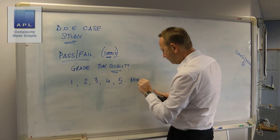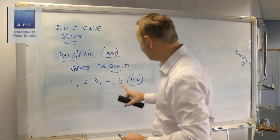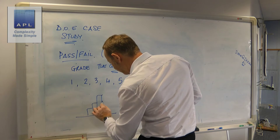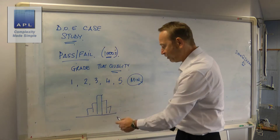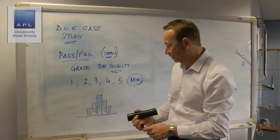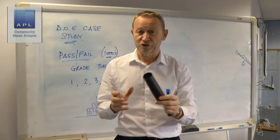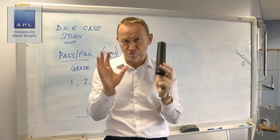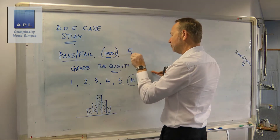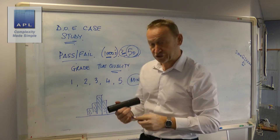Five is the minimum number of categories. We don't want fewer because five is the minimum number of categories you'd need if you tried to create some kind of histogram of what's going on. So we'll use a one-to-five scale and mold a normal sample size — instead of the thousands needed for pass-fail, we're going to go 30 to 50 samples.